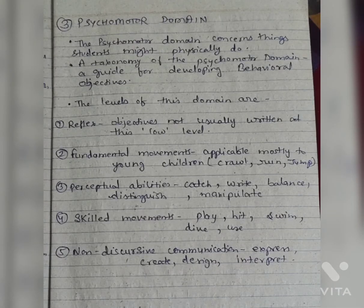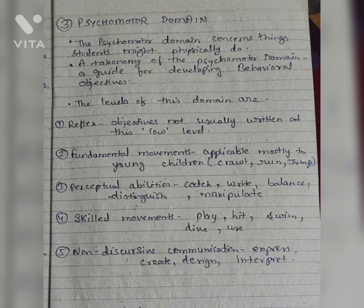Psychomotor Domain. The psychomotor domain concerns things students might physically do. A taxonomy of the psychomotor domain — a guide for developing behavioral objectives. The levels include: Reflexes — objectives not usually written at this low level. Fundamental movements — applicable mostly to young children: crawl, run, jump.